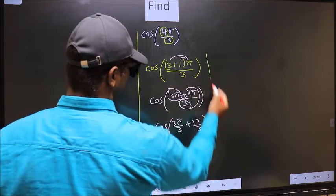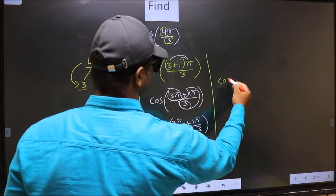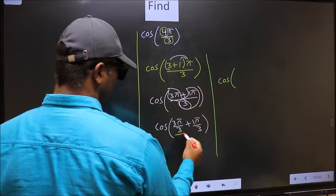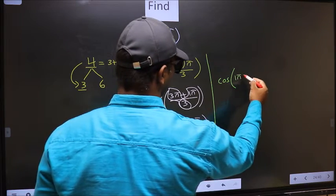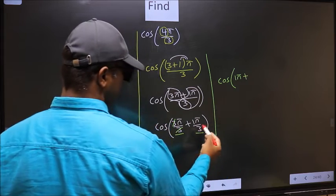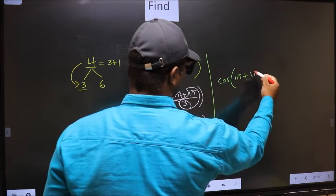That is 3π by 3 plus 1π by 3. Next, cos. Now here you cancel 3. We get 1π plus this no change, 1π by 3.